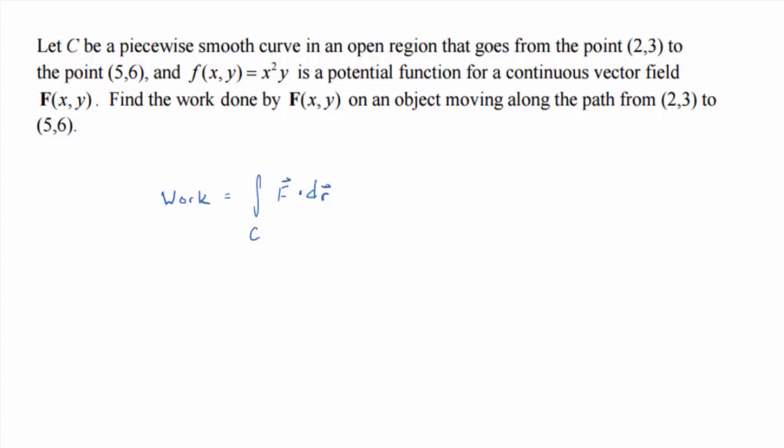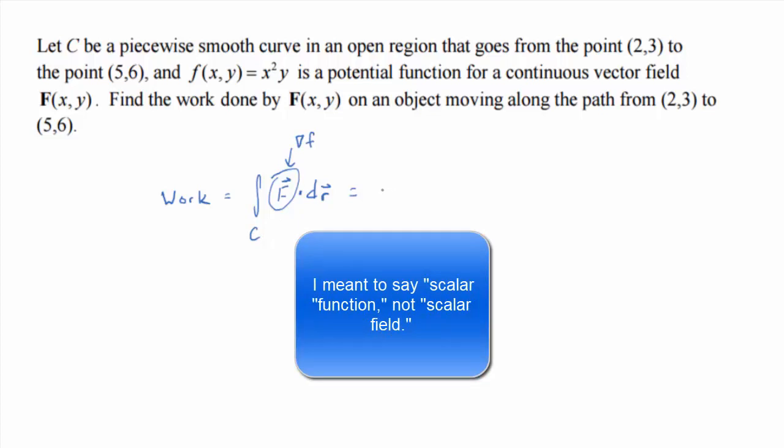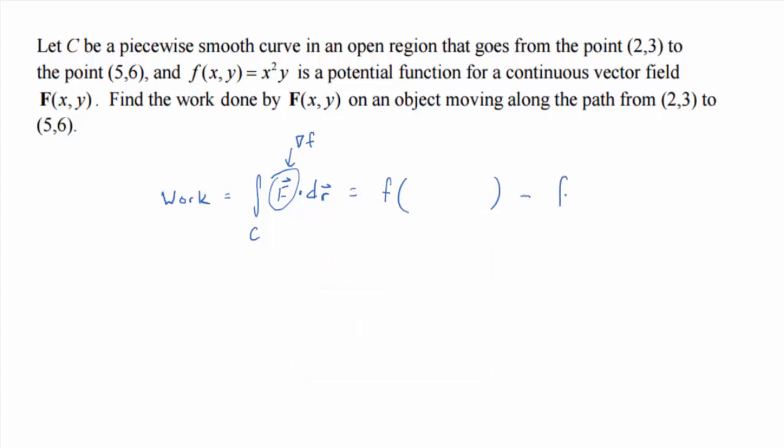But the idea is if we can write the vector field as the gradient of some scalar field, then this is equal to f of what minus f of what? Little f, from the scalar function, f of what minus f of what in words? There you go.